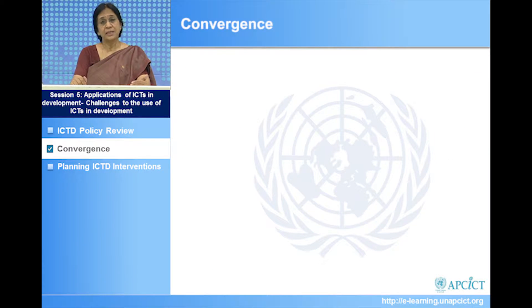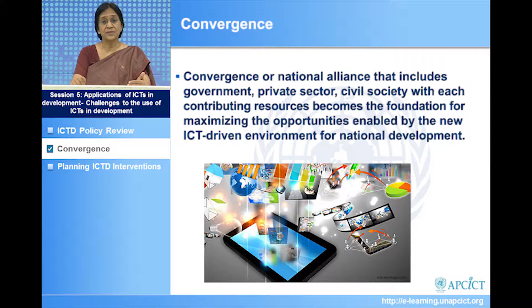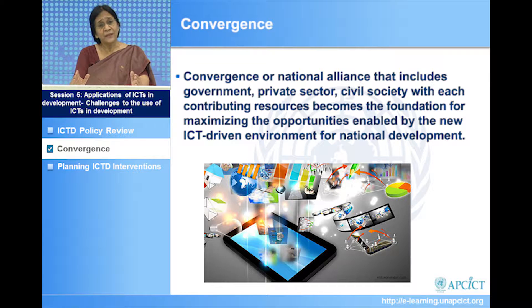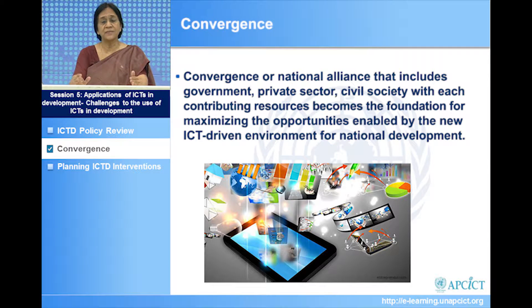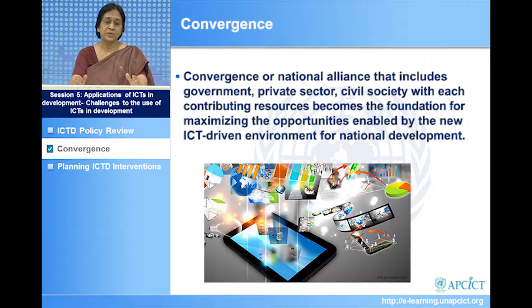Convergence also means it is not merely up to the government, but that we must work with a national alliance including government, the private sector, civil society, and all contributing resources — each becoming part of the overall system to optimize opportunities provided by technologies. For instance, if government devises policy but a public-private partnership means services are provided by the private sector because they are more efficient, then NGOs work at community level to enable citizens to use those services.